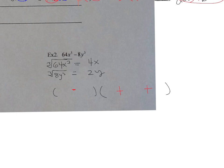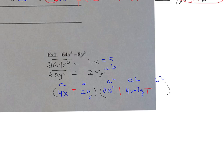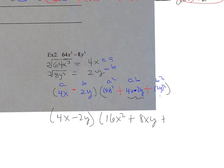A = 4x, B = 2y. Small parenthesis: 4x−2y. In the large parenthesis: front is (4x)² = 16x², middle is 4x×2y = 8xy, end is (2y)² = 4y². You have to square the whole term. Final answer: (4x−2y)(16x²+8xy+4y²).